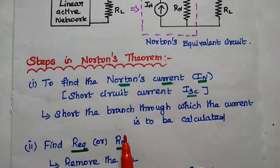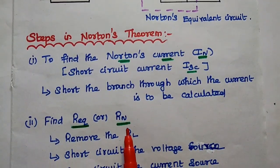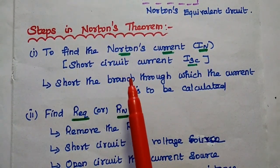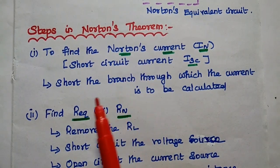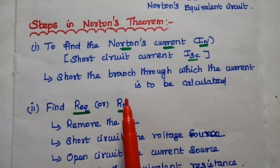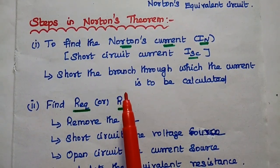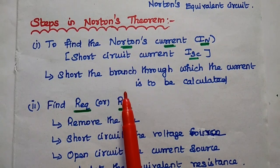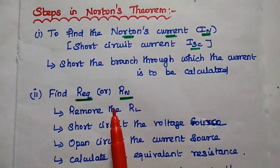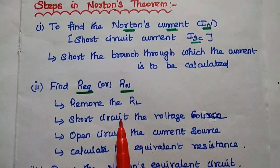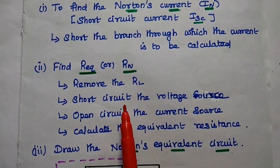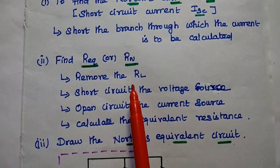Here are the steps in Norton's theorem. The first step is to find the Norton's current, that is the short circuit current, because we are going to short the branch through which the current is to be calculated. We identify the branch, short circuit it, and then find out the short circuit current, also known as Norton's current. The second step is to find out the equivalent resistance, also known as Norton's resistance.